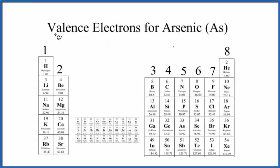There are two main ways to find the number of valence electrons for arsenic, that's As. The first, we can look at the periodic table and we can look at the pattern for valence electrons.